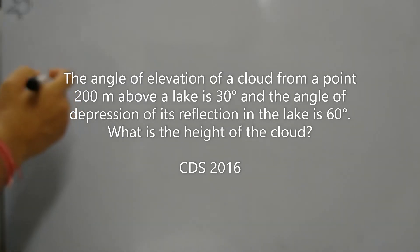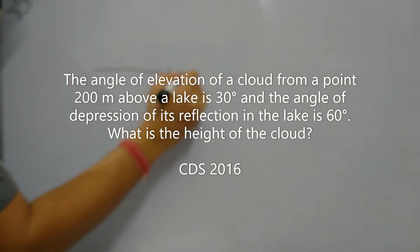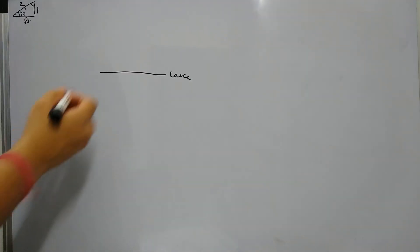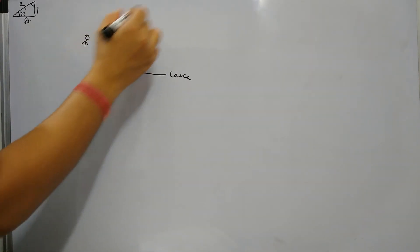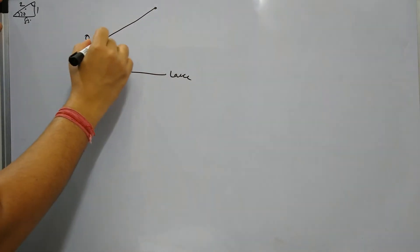So let's say we have a lake, and 200 meters above this lake from a point, somebody is standing here and seeing the cloud. The angle of elevation of the cloud is 30 degrees.